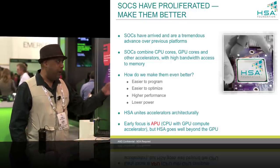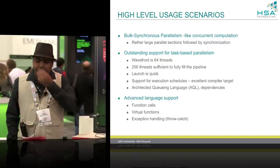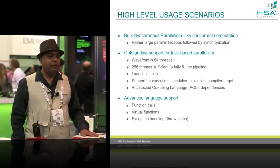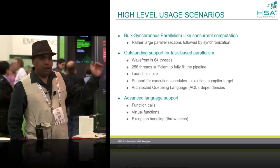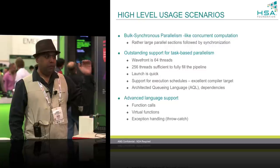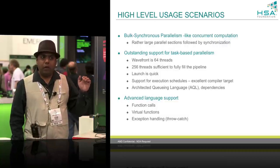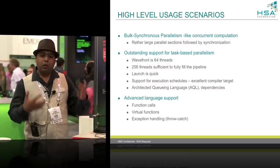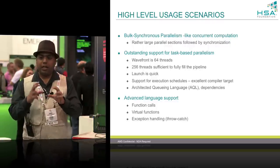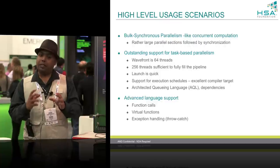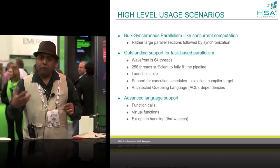The early focus is an APU — a CPU with GPU compute accelerators — but this can go way beyond a regular accelerator. Bulk synchronous parallelism is easy. We have outstanding support for task-based parallelism. It only takes 256 threads to sufficiently fill the pipeline to get maximum performance for a compute unit, and the launch is very quick. In our queuing model we have defined a language called AQL, and there are 64 bytes that you need to write to a queue to launch a task on a GPU. After you write the bytes, you ring a doorbell that tells the scheduler there is work to be done.